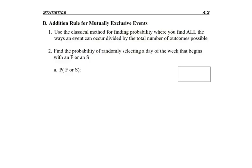Now let's apply the addition rule specifically for mutually exclusive events. We're picking a single item looking for more than one attribute, but the attributes do not happen at the same time.